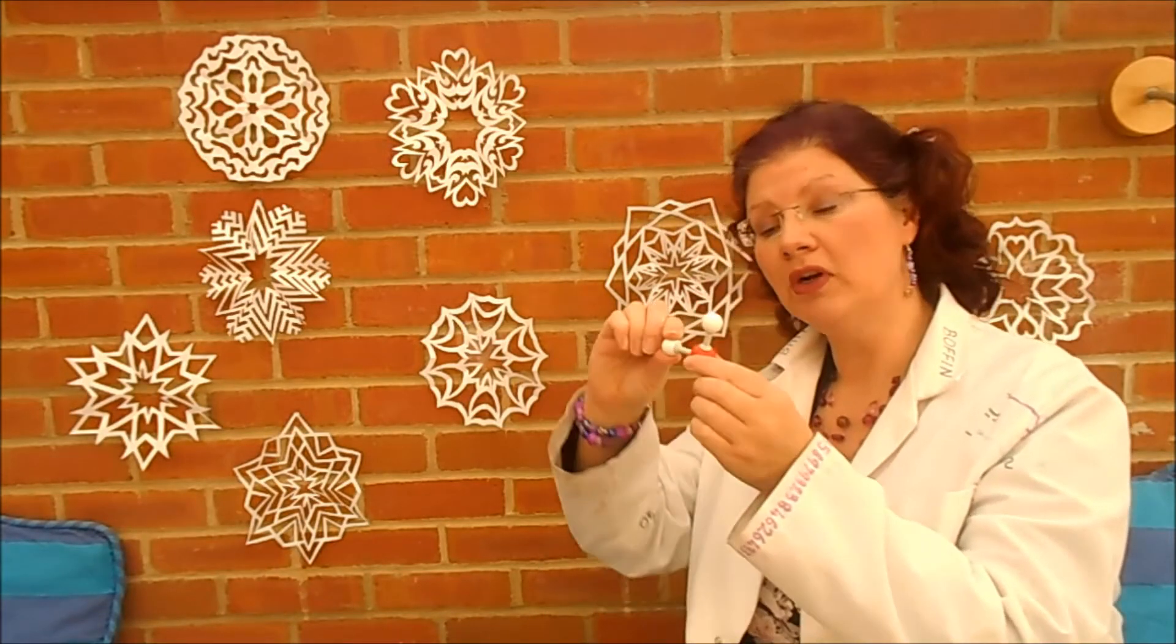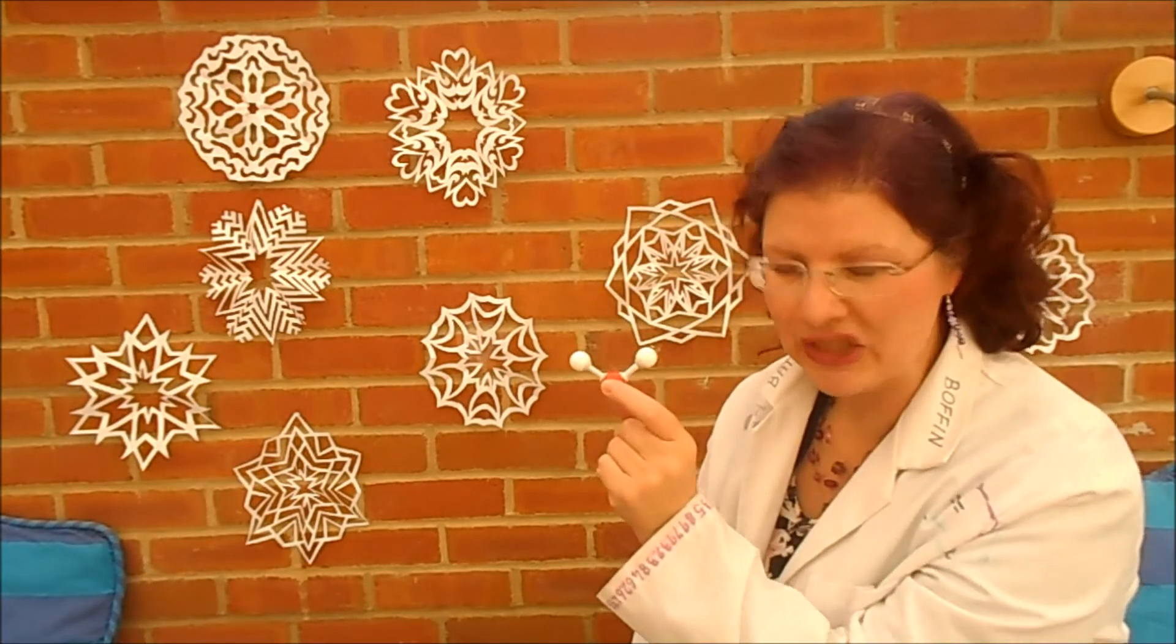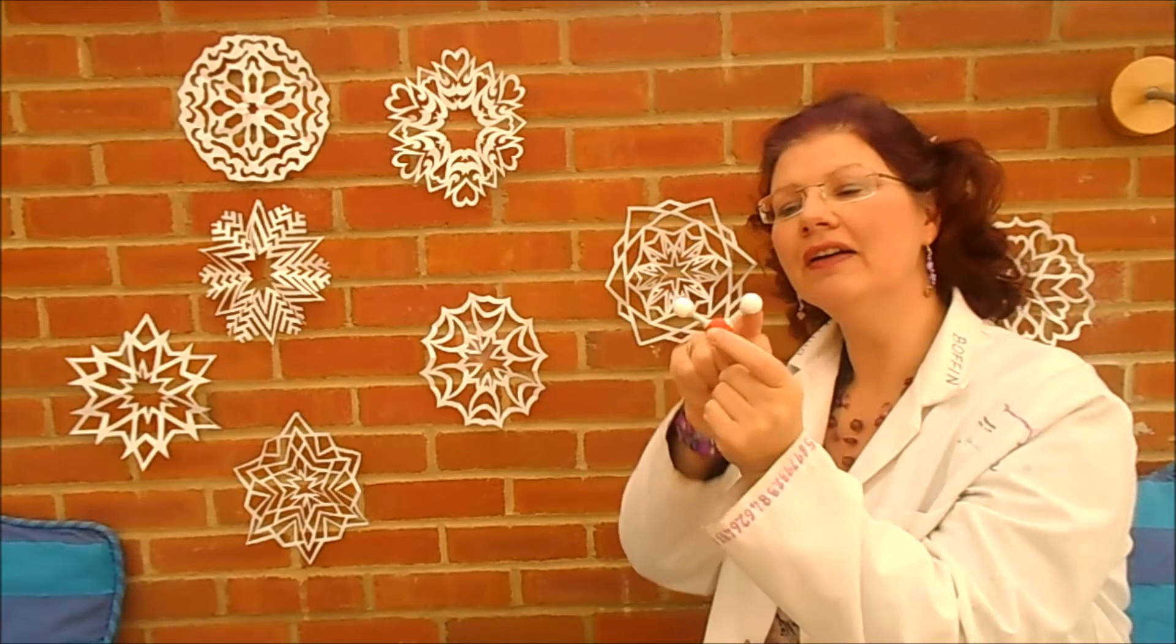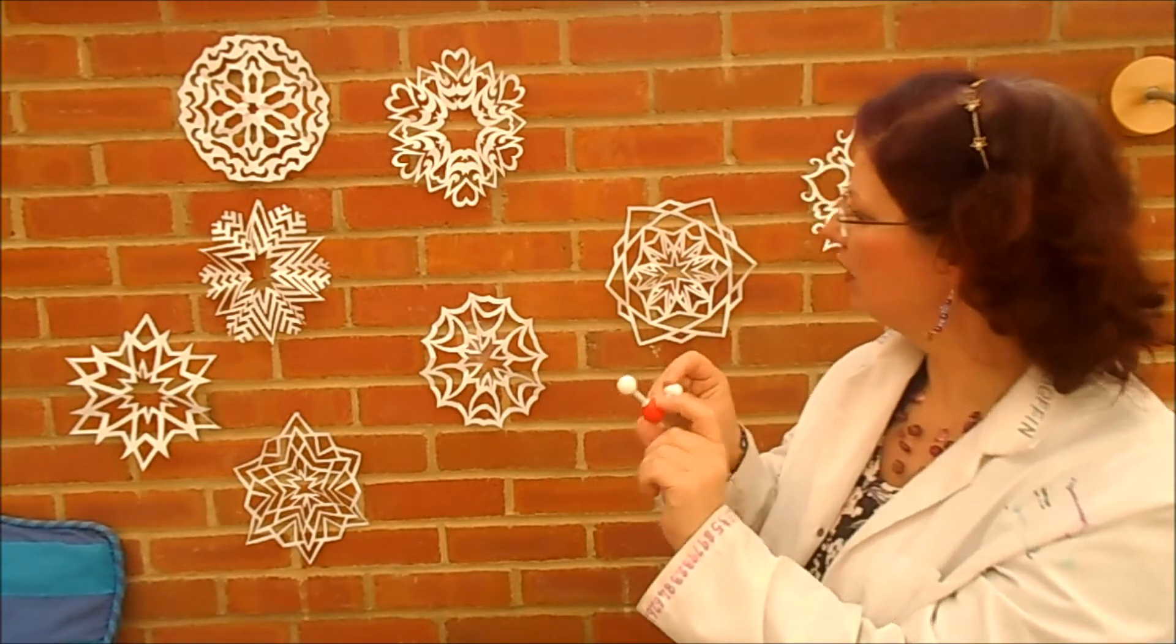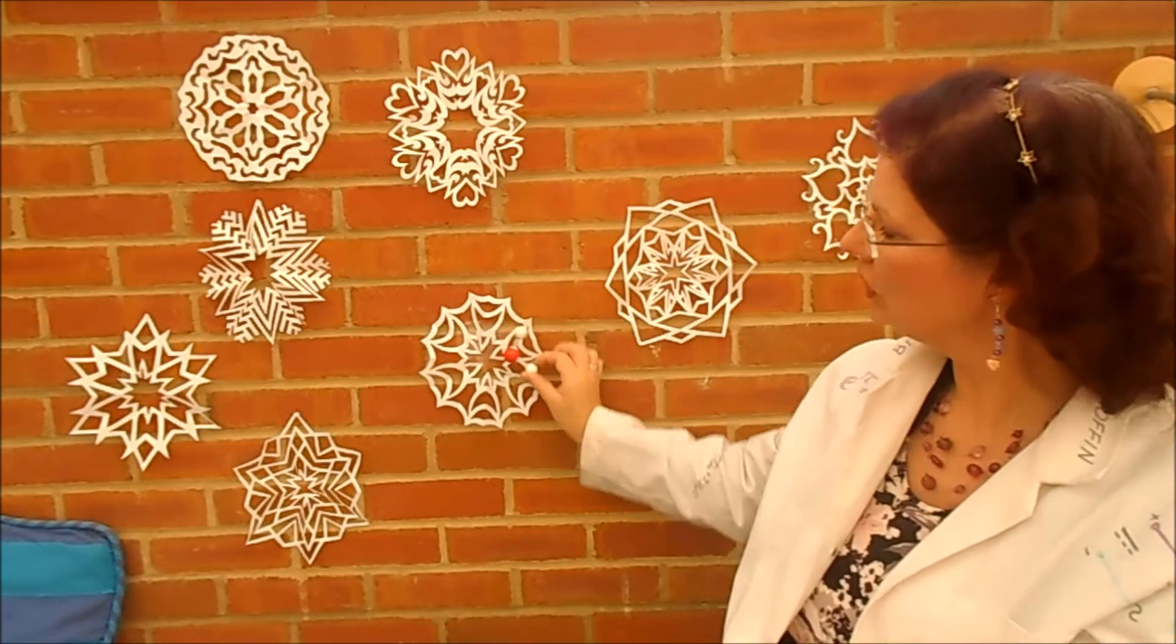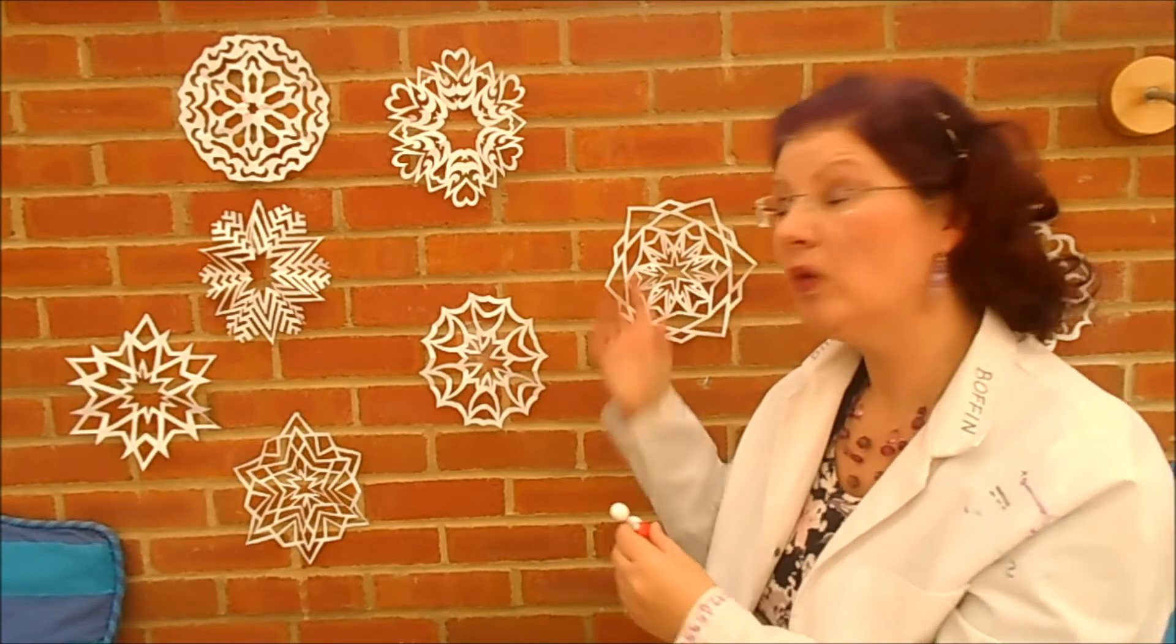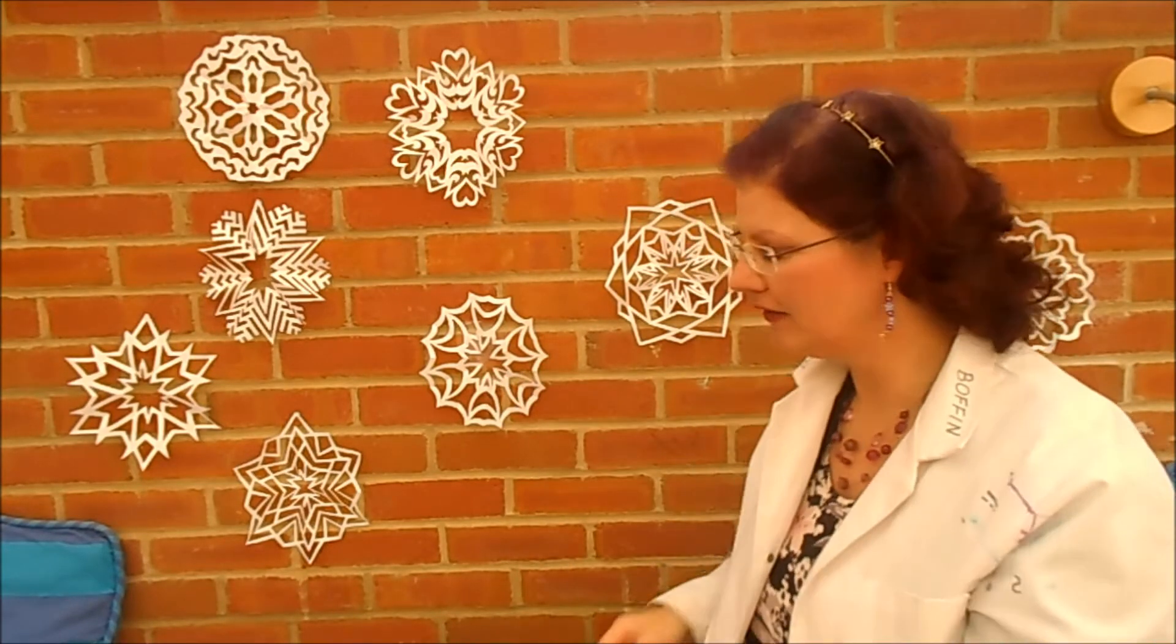The reason for that, incidentally, if you want to know, is the shape of the water molecule. That's the water molecule. It looks a little bit like Shrek. And this angle here is around about 120 degrees, which fits just nicely six times around the centre, which is why you get this six-pointed kind of thing.